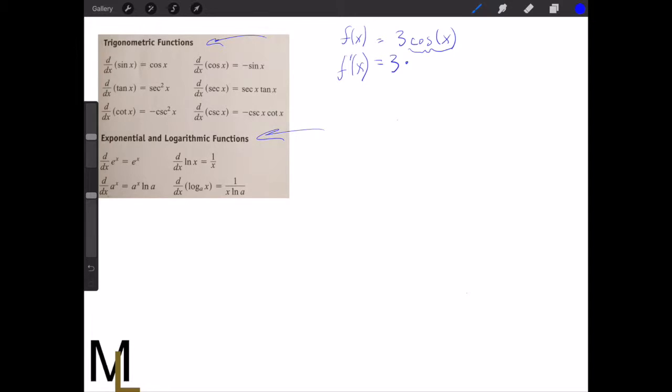The derivative of cosine results in negative sine, so all I have to do is write down sine of x, and that derivative is done. To simplify that, it would be -3sin(x). So let's look at a different example.